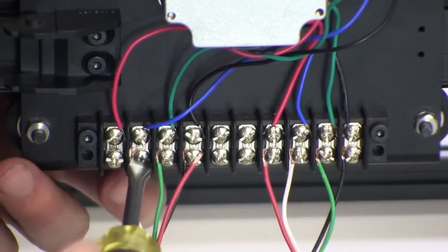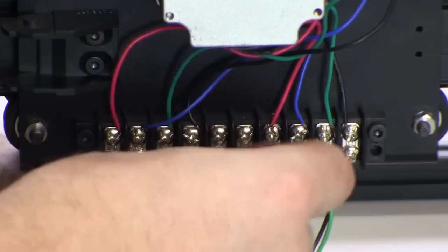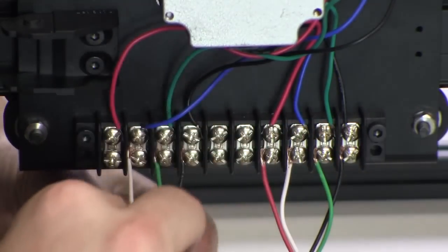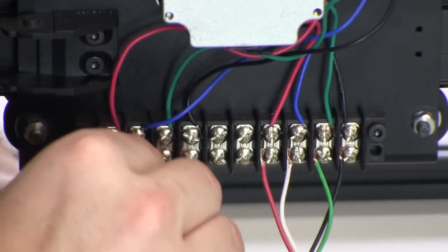One of the six-foot lengths will be on the right side of the terminal block and will correspond to the X-axis motor. Use the same wiring pattern.